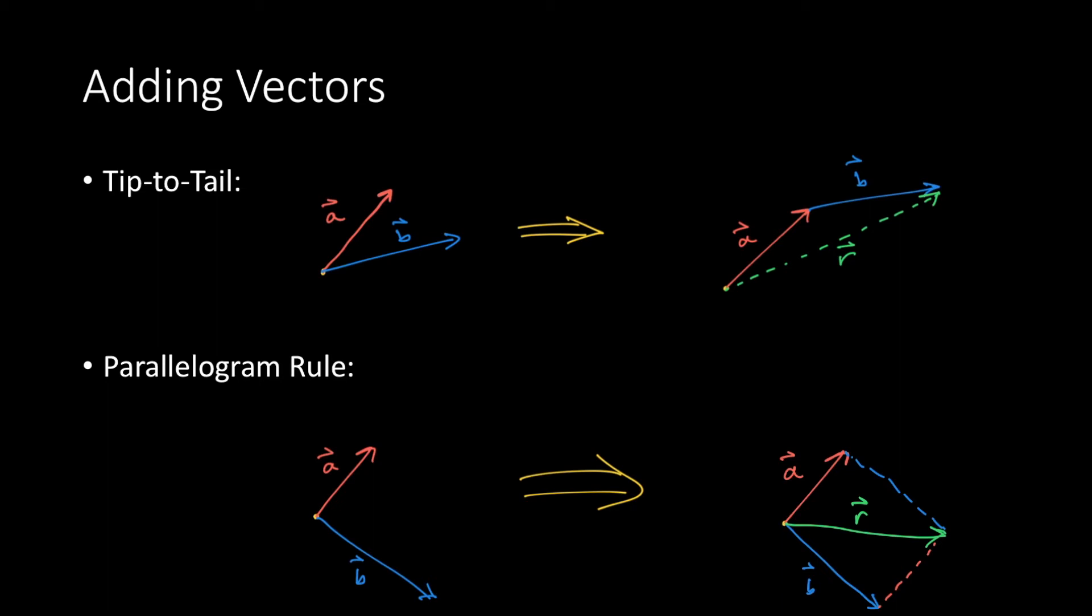For more than two vectors, you have to do multiple iterations each time with two vectors. This can be a cumbersome process if you have more than two vectors. As we can see, the tip-to-tail method would have given us the same result.